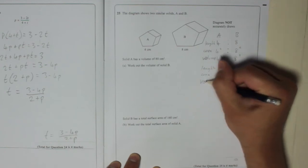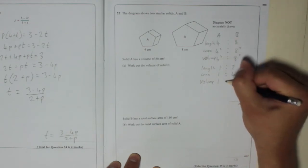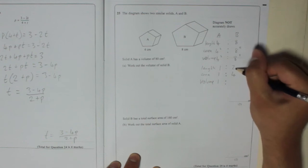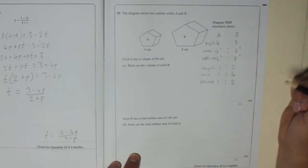And volume is going to be 1 cubed, which is still 1. But this time 2 cubed is 8. 2 times 2 is 4, times 2 is 8.